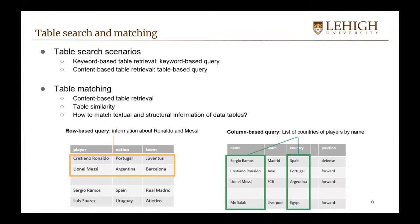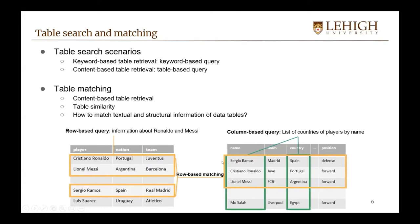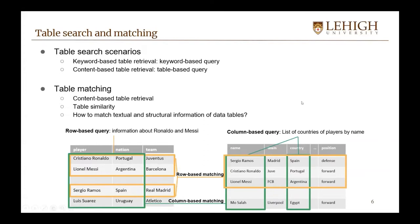For table matching, we have two tasks: content-based table retrieval and table similarity. In the literature, content-based table retrieval refers to a ranking task and table similarity refers to a classification task. Similar to keyword-based retrieval, we have two scenarios: row-based matching, where tables are matched based on similar rows, and column-based matching, where tables are matched based on similar columns. We need to match tables not only using headers but also with data values.